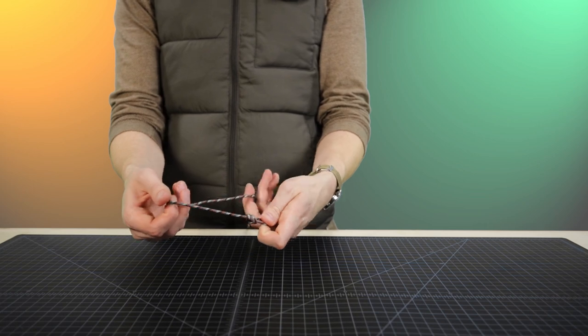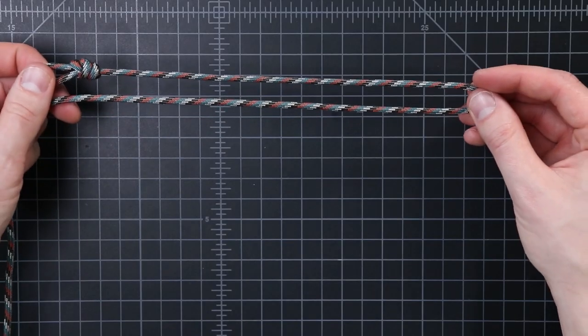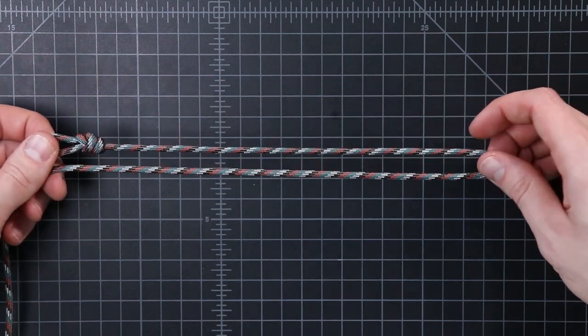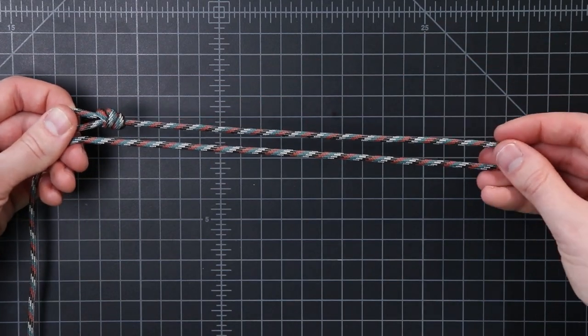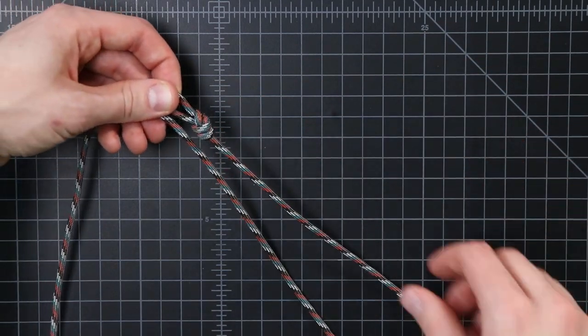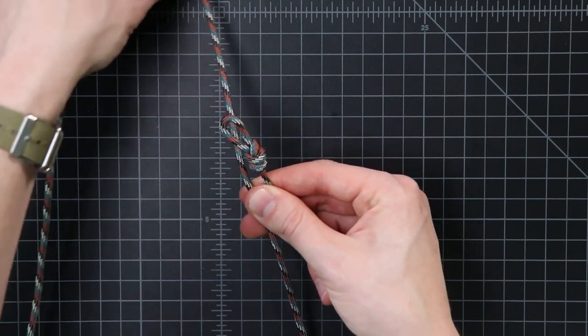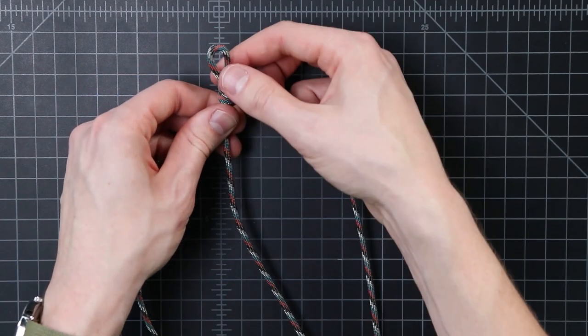Alright, so then we're going to make the length of our bracelet, and we just want to make sure that it's going to be longer than our wrist measurement. It doesn't have to be exact at this point. So I'm using about almost a foot here, just looping the cord back on itself. So then we'll come back to our end with the knot, and we'll bring our working end underneath that end with the knot, so that they cross over like this.